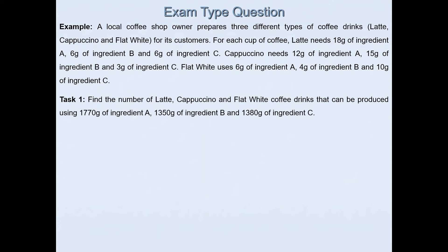The first task says find the number of latte, cappuccino, and flat white coffee drinks that can be produced using 1770 grams of ingredient A, 1350 grams of ingredient B, and 1380 grams of ingredient C.